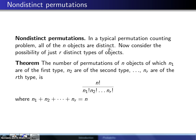Now what we want to do is consider the possibility of just r distinct types of objects in the n.